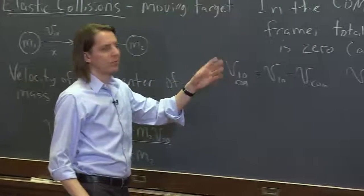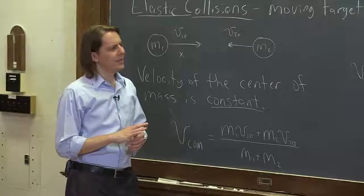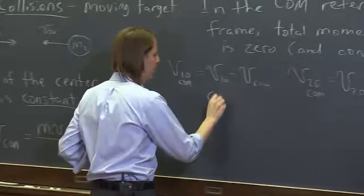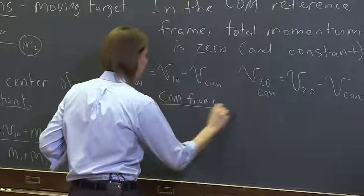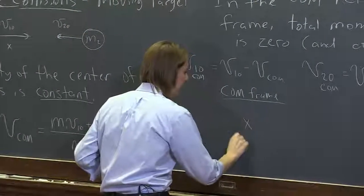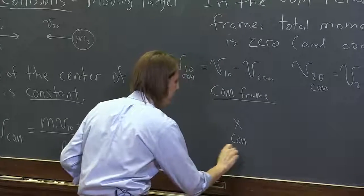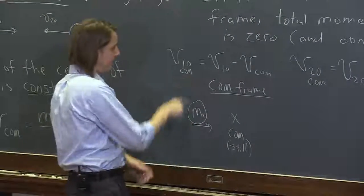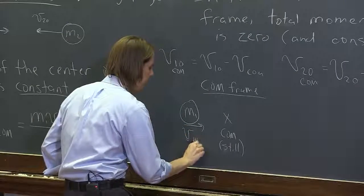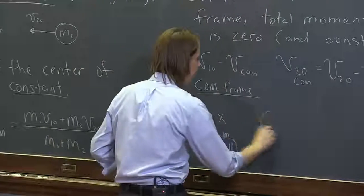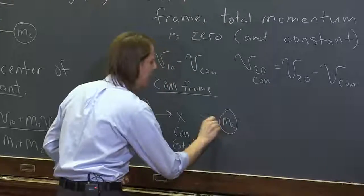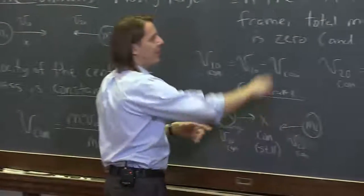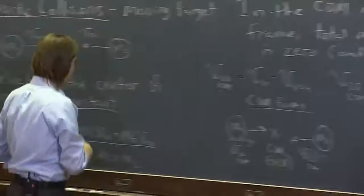Once we have those velocities, we could conserve momentum. But instead of doing all the math, let's think about it. If you're in the center of mass frame, it's still — you just see the two balls approach each other: M1 going at V1-naught-COM and M2 going at V2-naught-COM. They hit each other, and since the total momentum in this frame is zero as they approach, the total momentum must also be zero after they hit.